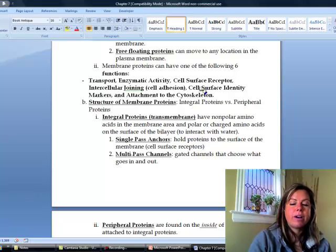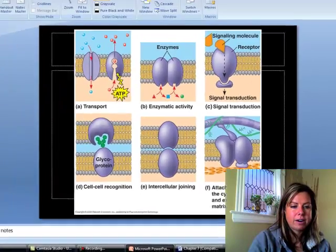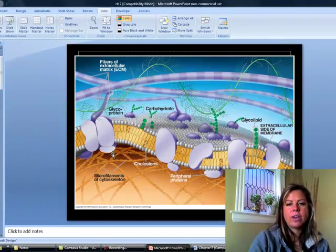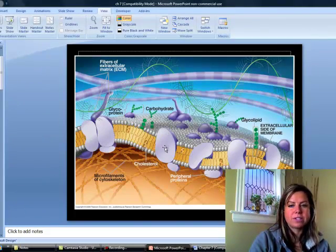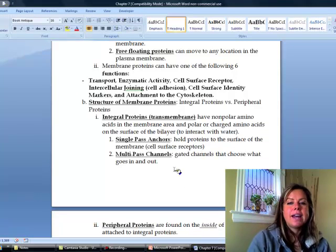So those are all of the different protein functions that you can see here. Now, as far as their structure goes, I was talking about how you've got integral and peripheral proteins. So here you can see the difference. So integral proteins are the ones that are going from one side to the other. Peripheral proteins are all along the inside of that membrane of the cell. They're along the periphery, right? So that's how you can remember them.